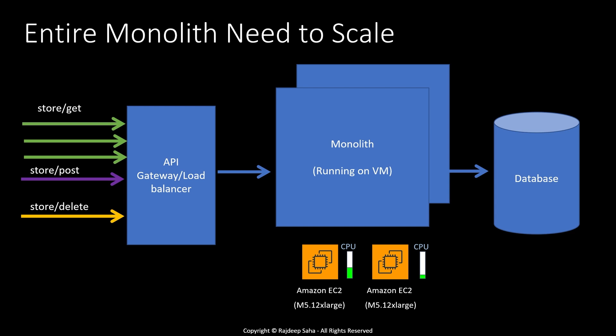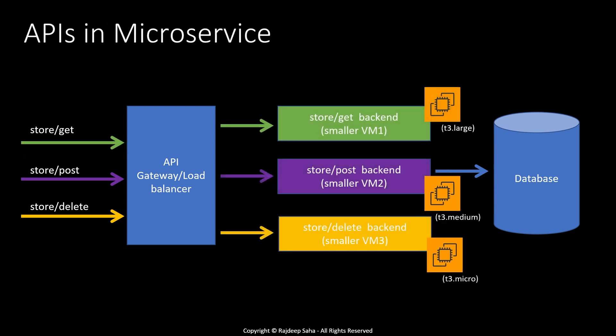So how would it look with microservices? With a microservice approach, all three components — store/get, store/post, and store/delete — have different code bases and run on different virtual machines. You can control the memory and CPU of each EC2 based on the type of the API. In this example, store/get runs on a t3.large, store/post runs on a t3.medium, and store/delete runs on a t3.micro.